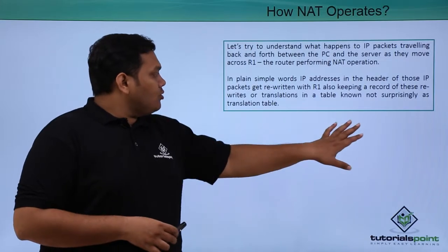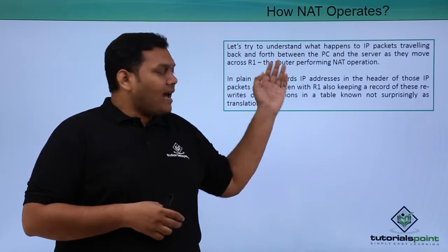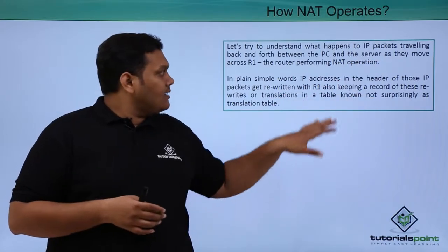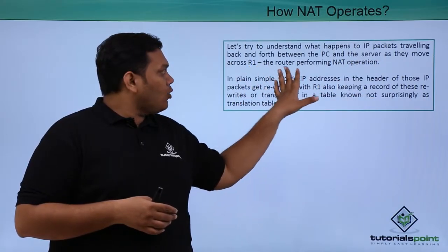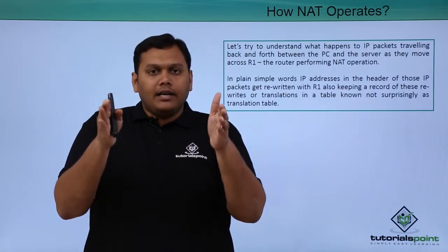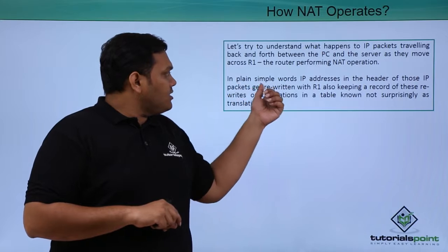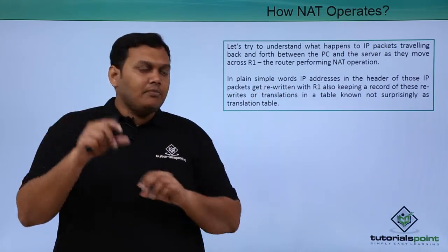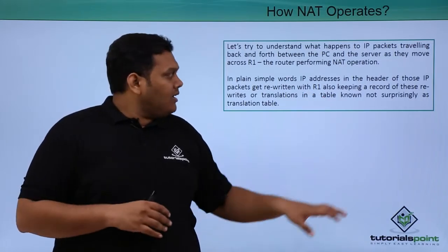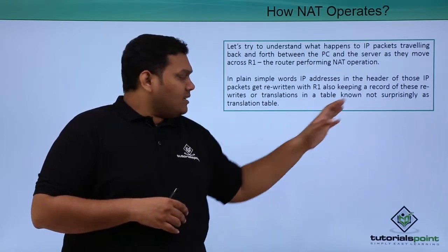Let us understand how NAT works. As IP packets travel between the PC and the server, you can see a drastic change at R1, the router performing the NAT operation. In simple terms, the IP address in the header gets rewritten by R1, and the record of these rewrites is stored in what is called the translation table.